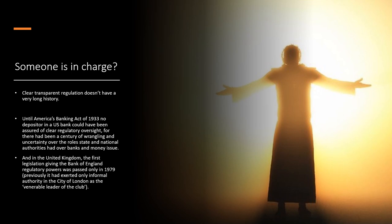Until America's Banking Act in 1933, no depositor in a US bank could have really been assured of clear regulatory oversight. There had been a lot of confusion and wrangling about what type of regulation, who was supposed to regulate, and whether banks were even supposed to be self-regulating, until that very first Banking Act changed the game. In the United Kingdom, the Bank of England was historically just a normal private bank — just a big one — and regulatory powers were only passed to the Bank of England in 1979. Previously, it had exerted only informal authority in the City of London.